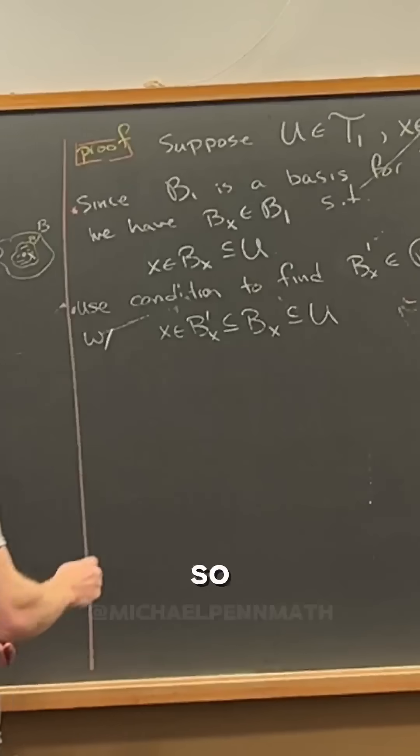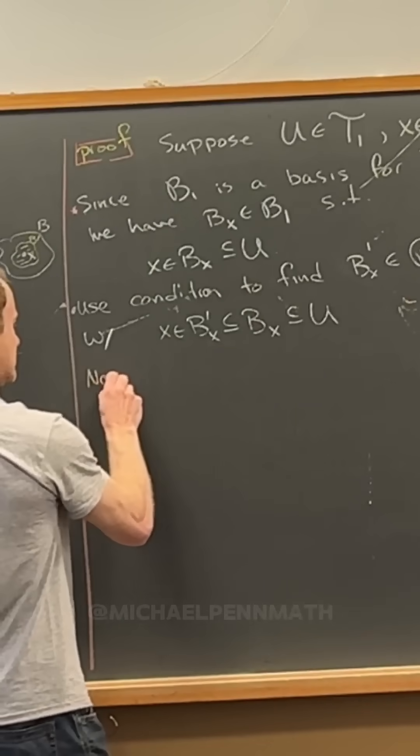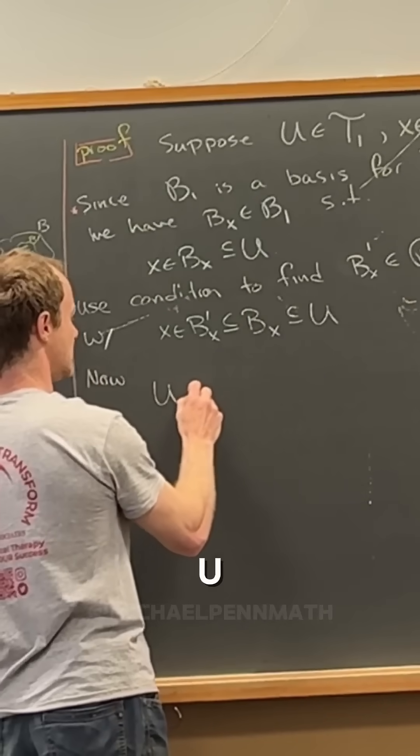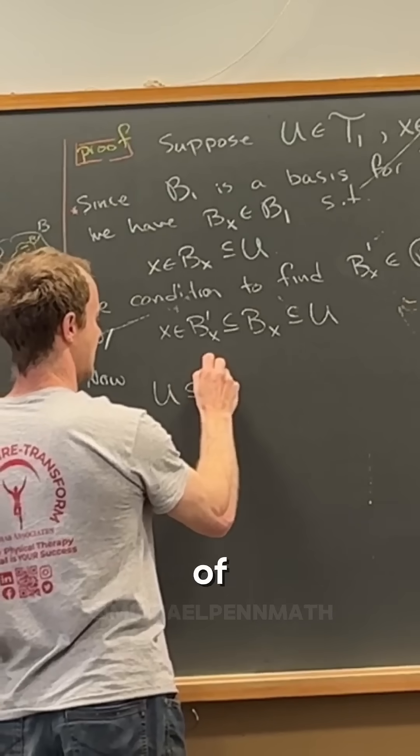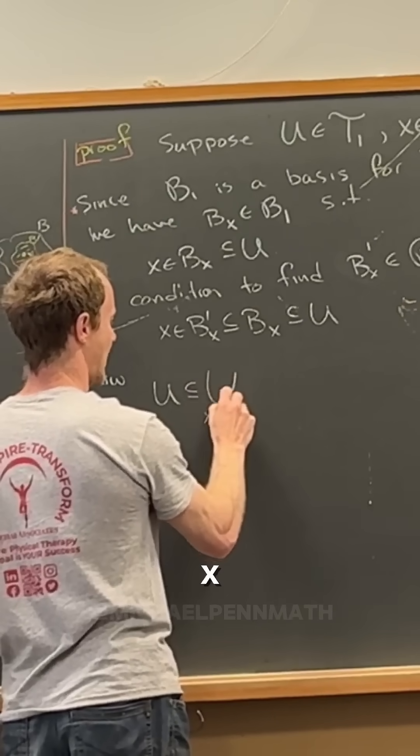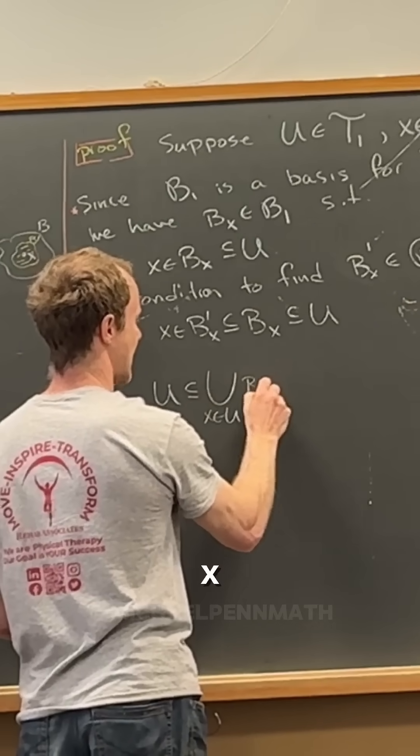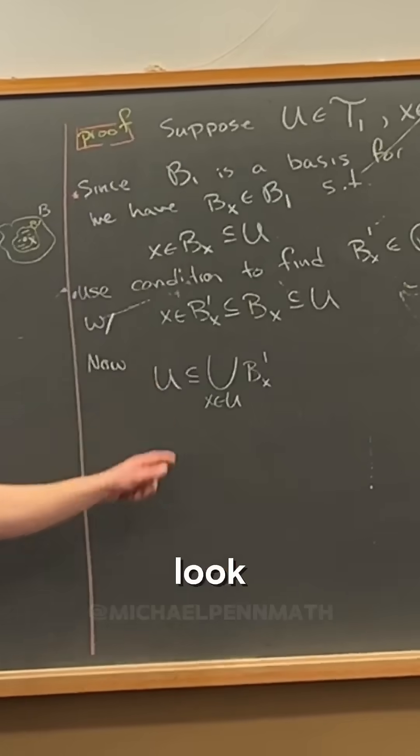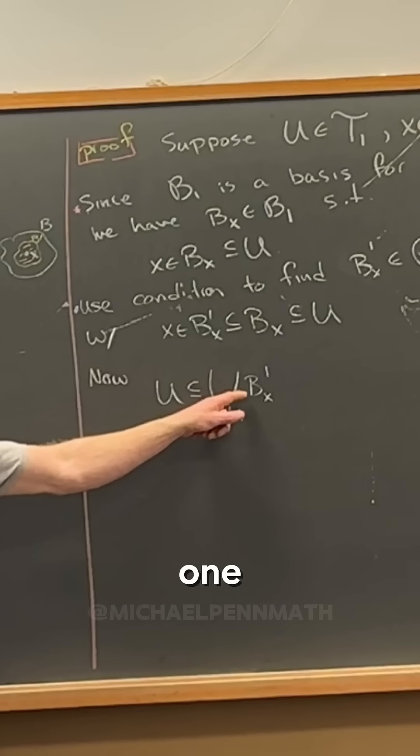And now let's look at this. So now observe that U is going to be a subset of the union over all x in U of B_x prime. Well look, because if x is in U, then x is in one of these B_x primes from above.